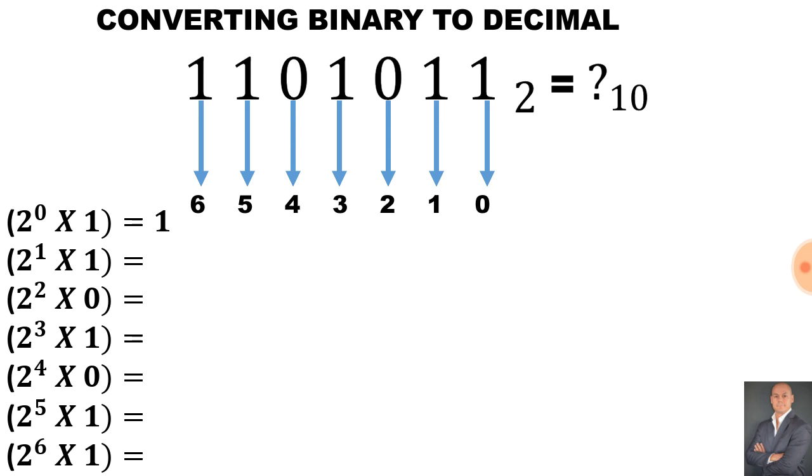So 2 to the power of 0 multiplied by 1 gives me 1. 2 to the power of 1 multiplied by 1 is 2. Anything multiplied by 0 is 0. 2 to the power of 3 is 8 multiplied by 1 is 8. Anything multiplied by 0 is 0, 2 to the power of 5 is 32 multiply by 1, and 2 to the power of 6 is 64 multiply by 1.